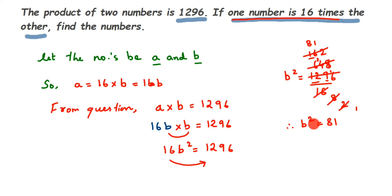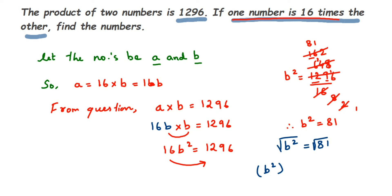We want the value of b, not b squared. To remove the square, take the square root on both sides. The square root is the power of one-half, so the square and square root cancel on the left side, giving us b. The square root of 81 is 9, so b equals 9.